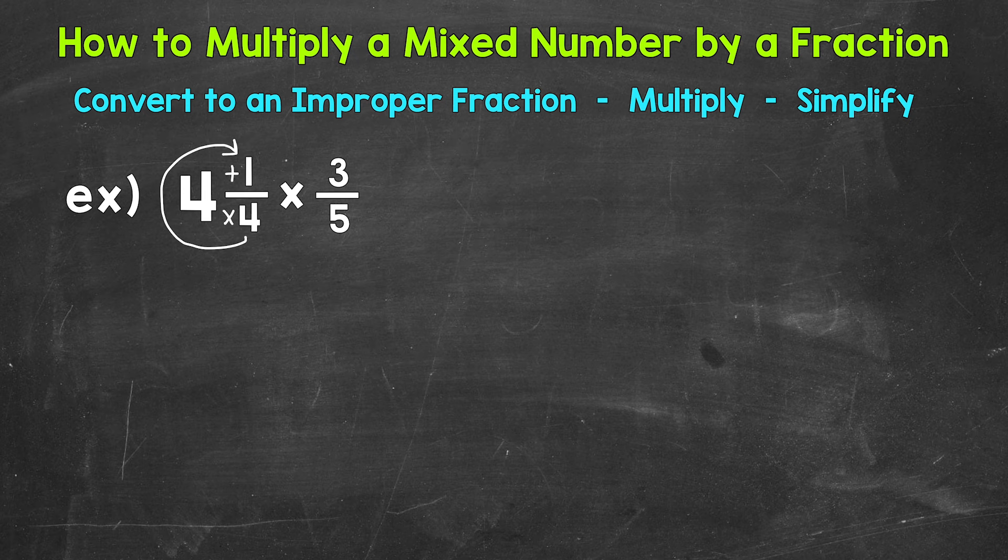So our denominator times the whole number. 4 times 4 is 16. And then we add the numerator. So 1, 16 plus 1 gives us 17. That's the numerator of our improper fraction. And then we keep the denominator of 4 the same.